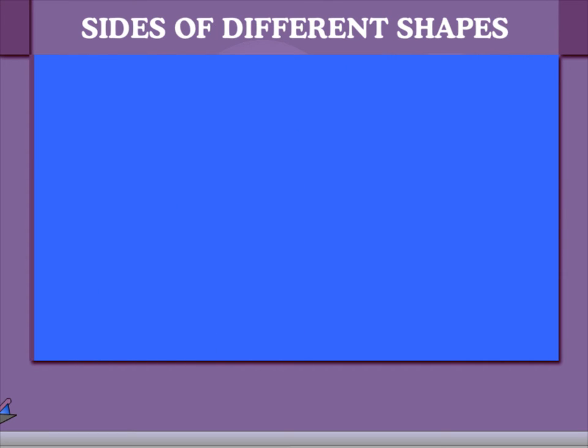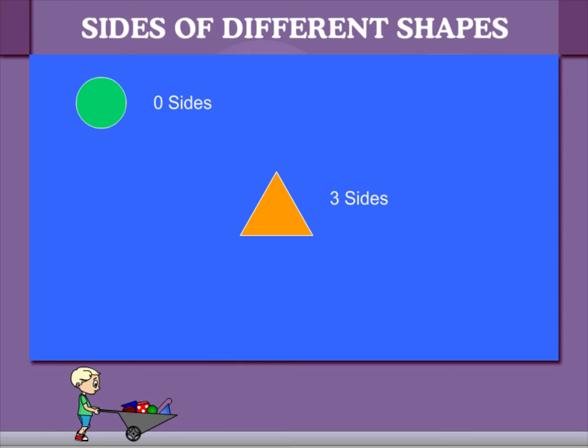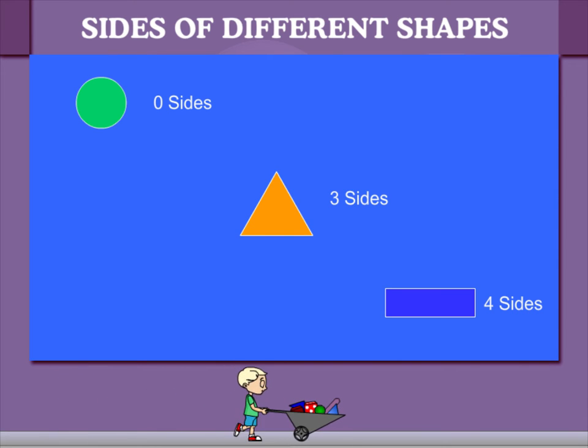Sides of Different Shapes. A circle has zero sides, a triangle has three sides, and a rectangle has four sides.